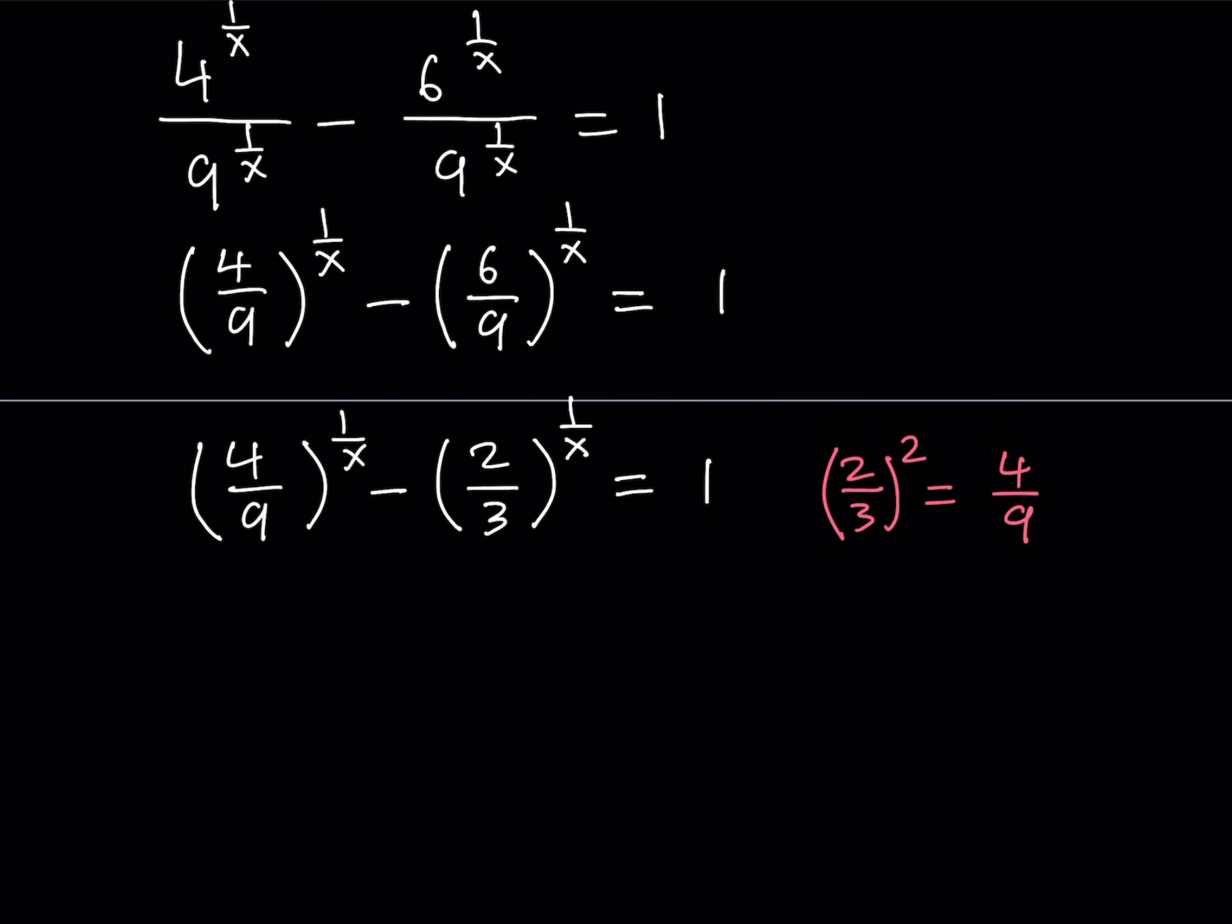So, what am I going to do? I'm going to call this u. So, suppose 2 over 3 to the power 1 over x is equal to u. Then, this becomes u squared, right? Because 4/9 is 2/3 squared. Same exponent. So, we just need to square the base. So, this becomes u squared minus u is equal to 1. Great. Now, this became a quadratic. And look at the difference. We started off with a very crazy exponential equation with the bases are different. Exponent is 1 over x. Just everything was so crazy.